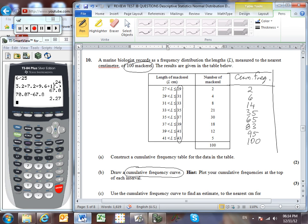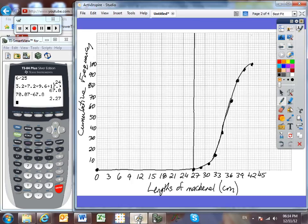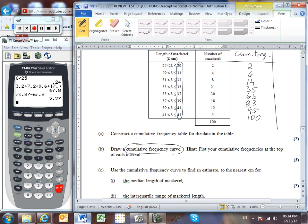Part C. Use the cumulative frequency curve to find an estimate to the nearest centimeter for the median length of the mackerel. Alright. So our median length. Well, we've got a total of 100 mackerel. The median occurs halfway up at 50. So let's trace across at 50 and then see what this corresponds to. Looks to be, well, somewhere around 36, give or take, doesn't it? And we're normally allowed a little margin of error. So I'm going to write down 36. So the median length is 36 centimeters.